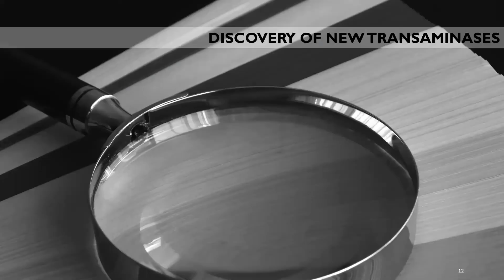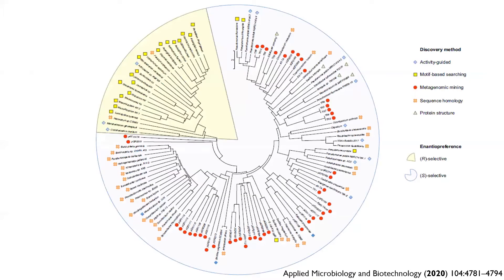Another really important transaminase available today is the S-specific omega transaminase from Chromobacterium violaceum, which sees a lot of investigation in biocatalysis. Over the years, many other transaminases have been discovered using several different approaches. Most of them are S-selective; however, also a lot of R-selective ones were identified mainly using a motif-based searching approach.